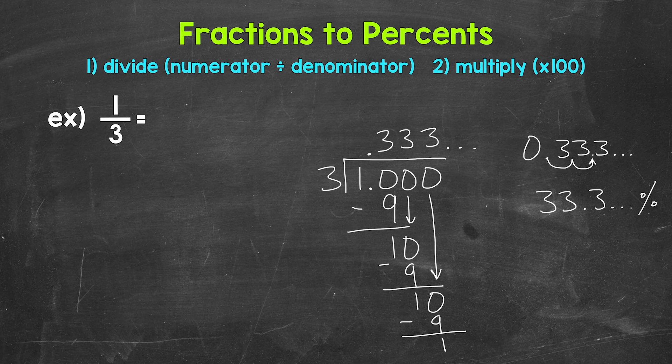So one third equals 33.3. And we can put a bar above that three to show that that digit repeats percent. So one third equals 33.3 repeating percent. Now that's one way to write out a repeating decimal as a percent. Another option is to round. And for this example, we're going to round to the tenths place and to the nearest whole percent.